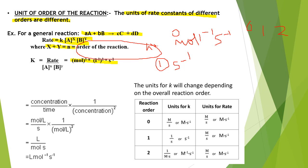Similarly, if we put N equals 2 for a second-order reaction, mol to the power (1 minus 2) gives mol to the power minus 1, and liter to the power (2 minus 1) gives liter to the power 1. So the unit becomes liter per mol per second. The unit changes according to the order of the reaction.